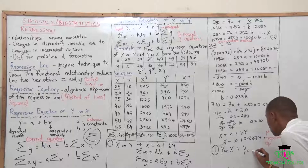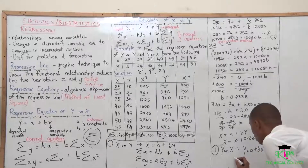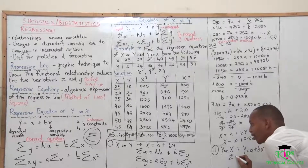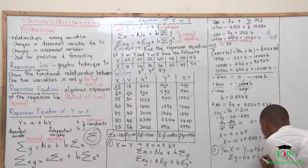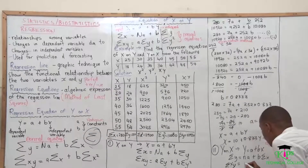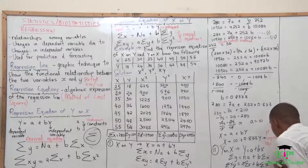To get this, we usually say y is equal to a plus b of x. The normal equation for y on x is that the summation of y is equal to n·a plus b·summation of x. Then the summation of xy will equal a·summation of x plus b·summation of x squared.